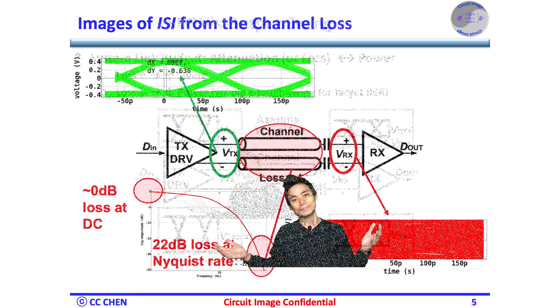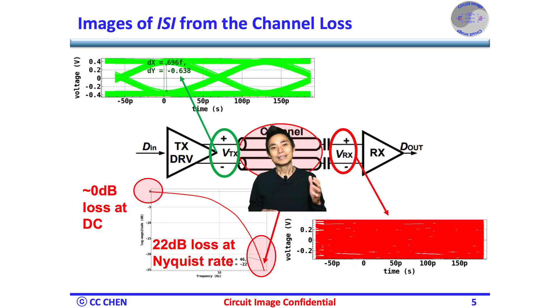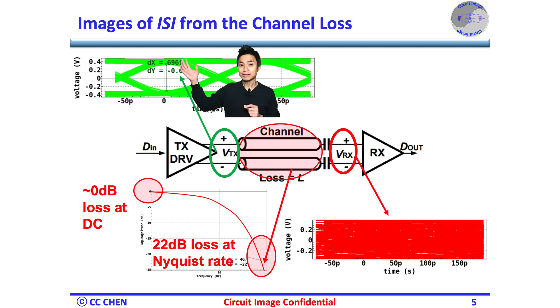What's next? Bingo! The frequency-dependent channel loss causes the inter-symbol interference ISI. Even though the output driver provides a big output swing, such as a 600 mVppd.